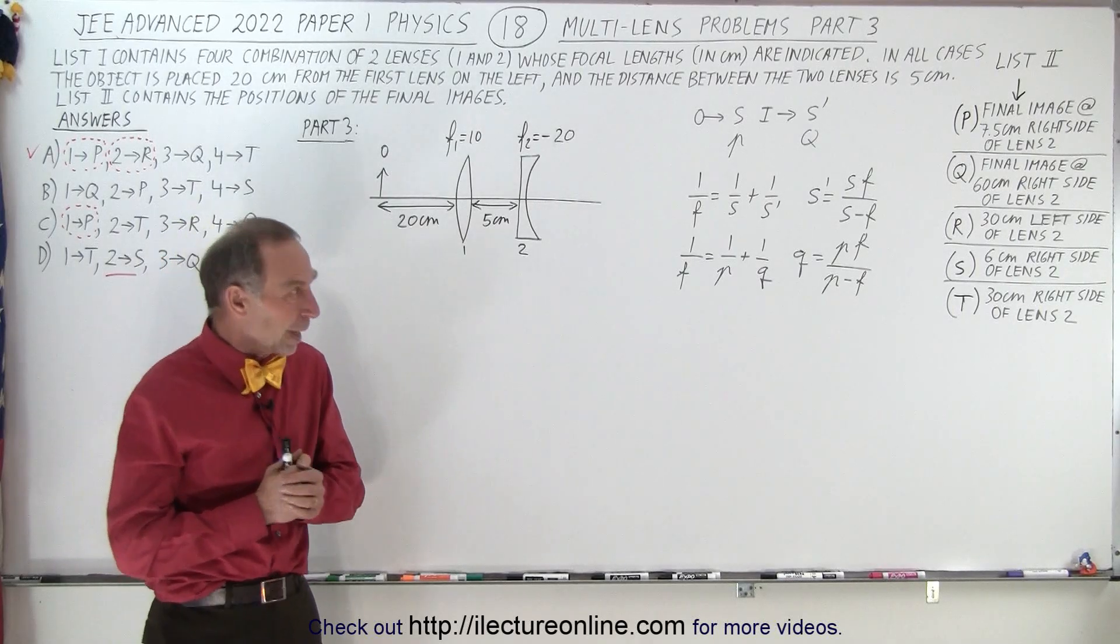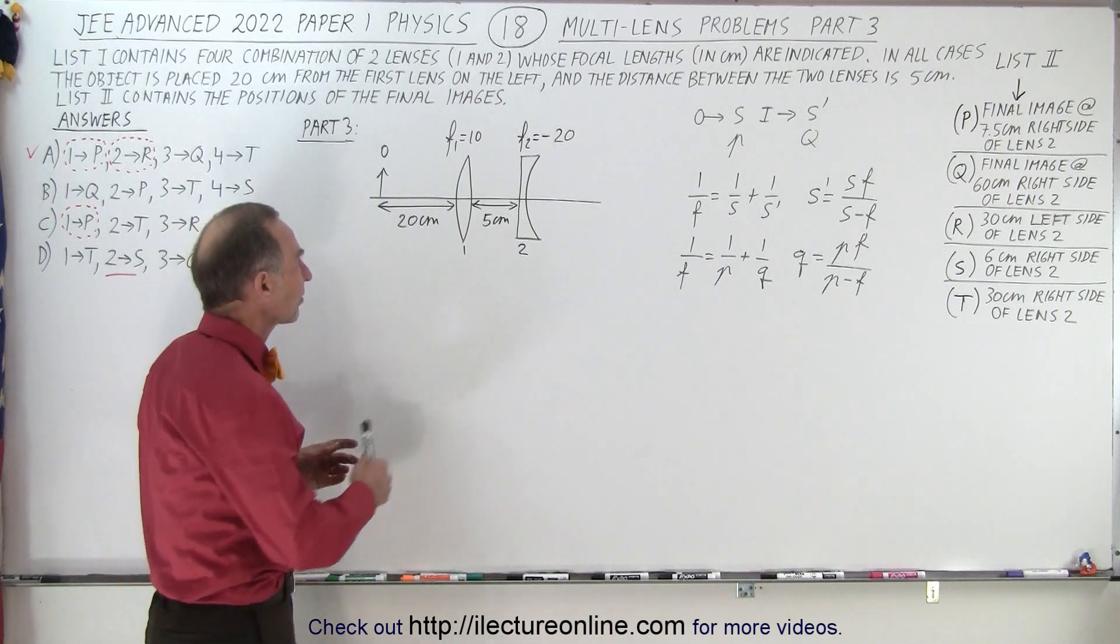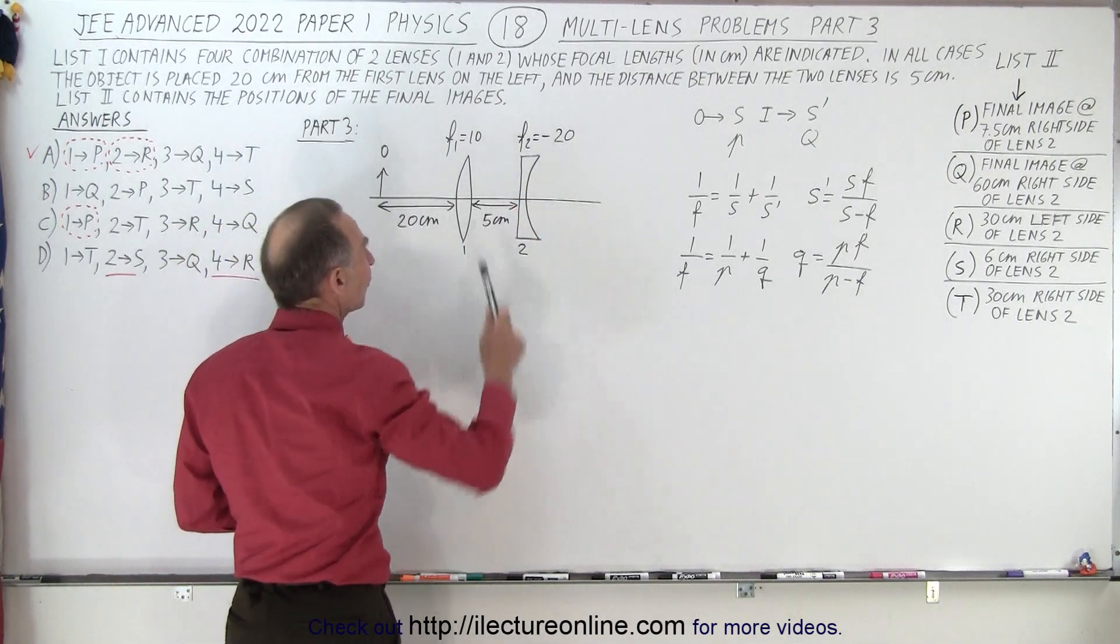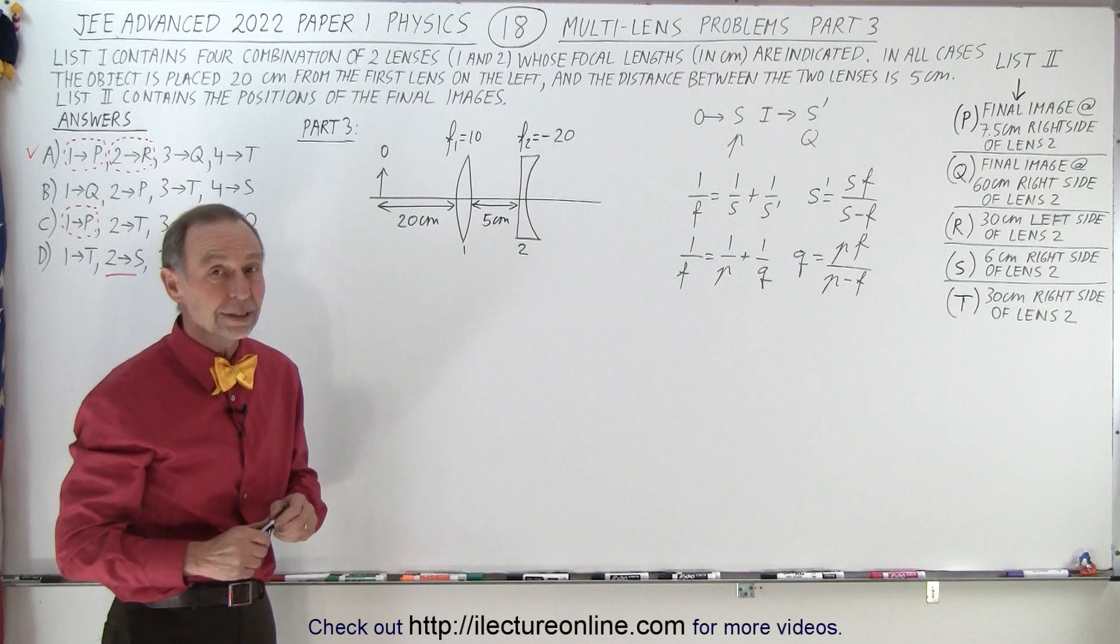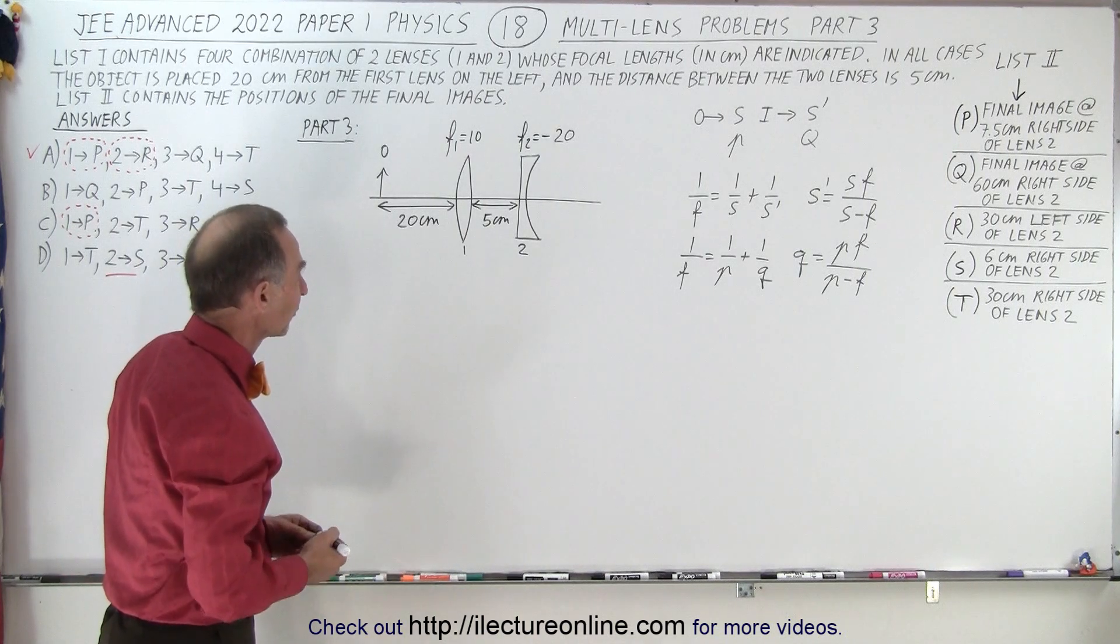Welcome to iLectronLine. Now we're ready to do part 3 of this problem. Notice that the second lens now has a negative focal length of minus 20 centimeters, so it's a diverging lens instead of a converging lens.